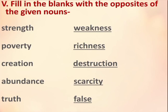Question number 5: Fill in the blanks with the opposites of the given nouns. Strength — My mama is my strength, and the opposite is Weakness. Poverty — Richness. Creation — Destruction. Abundance — Scarcity. Truth — Falsity.